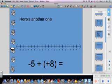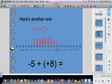Here's another one. We have negative 5 plus positive 8. I'm going to start at 0 and go to negative 5: 1, 2, 3, 4, 5. Then I go the other way, positive 8, counting up from negative 5: 1, 2, 3, 4, 5, 6, 7, 8. I land on 3, so negative 5 plus positive 8 equals positive 3.